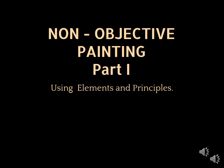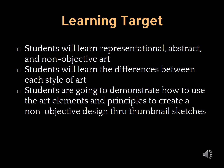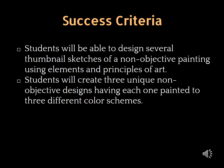Welcome to Mr. Stanish's Studio: Non-Objective Painting Part 1, Using Elements and Principles. Learning Target: You will be learning representational, abstract, and non-objective art, and the differences between each style. Success Criteria: You will be able to design several thumbnail sketches of a non-objective painting using the elements and principles of art, and create three unique non-objective designs each painted to three different color schemes.